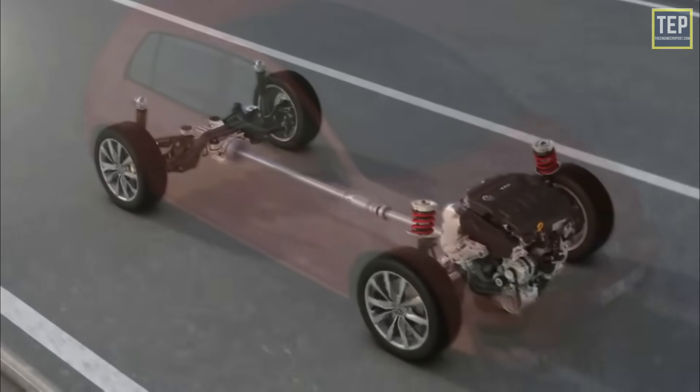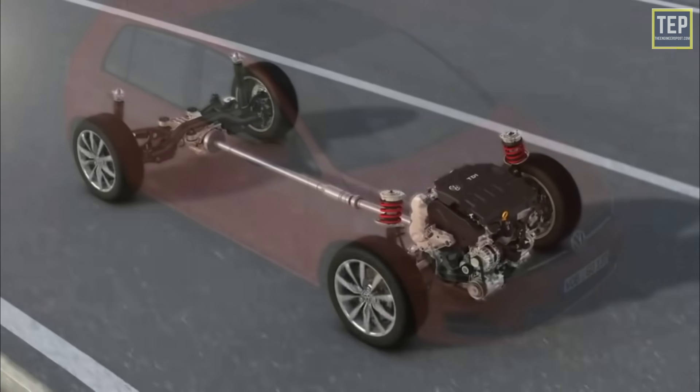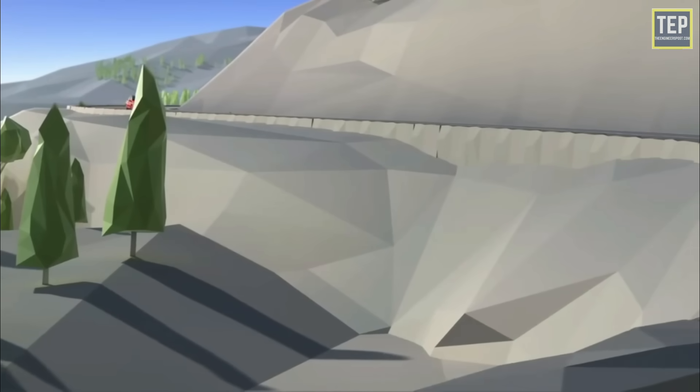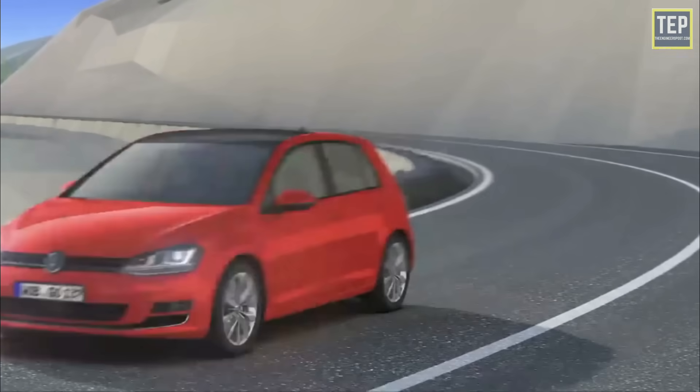When a wheel is in the air, a torsen differential works similar to an open differential, and very little torque is transferred to the drive axle. This is perfectly acceptable for road use, but it can be an issue for more purpose-built vehicles on the track.